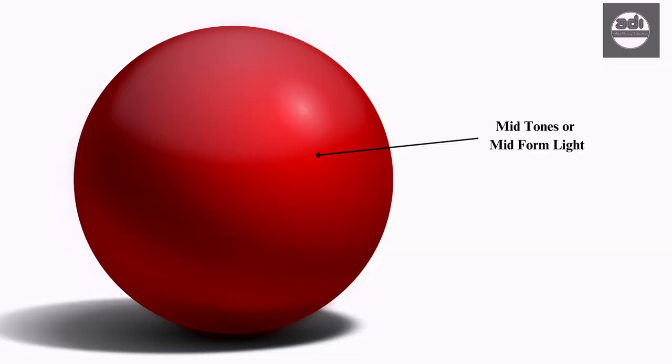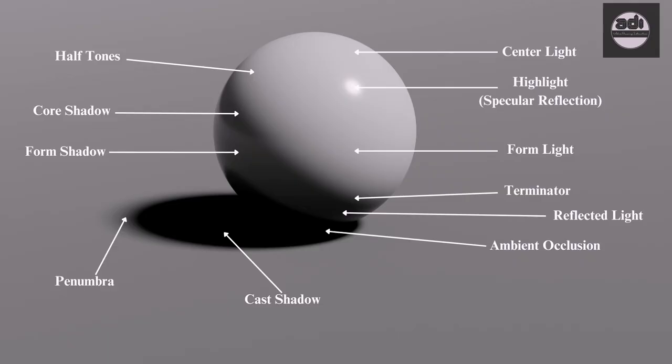The center light and highlight are different effects of light on the surface of the subject and are often confused as one and the same.